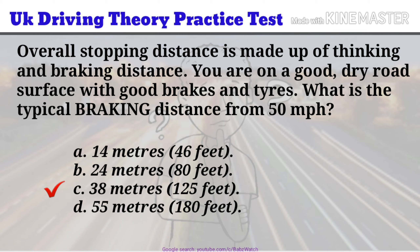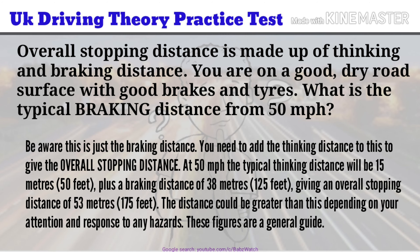38 metres (125 feet). Be aware this is just the braking distance. You need to add the thinking distance to give the overall stopping distance of 53 metres. At 50 mph the typical thinking distance will be 15 metres (50 feet), plus a braking distance of 38 metres (125 feet), giving an overall stopping distance of 53 metres (175 feet). This distance could be greater depending on your attention and response to hazards.